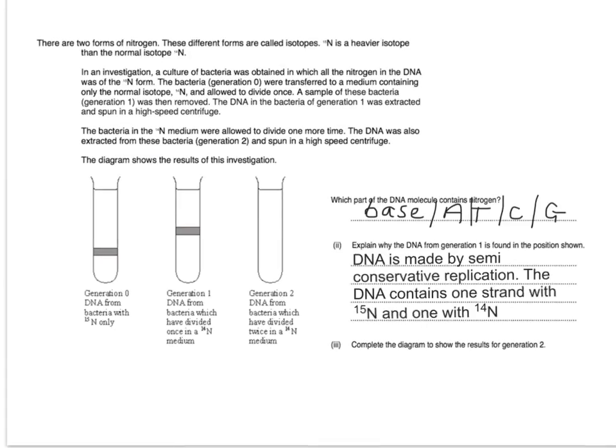Finally, they ask you to complete the diagram. Here, you should know that if the DNA replicates again, we will have half the DNA which is the intermediate 15N, 14N, and half will be new, completely 14N.